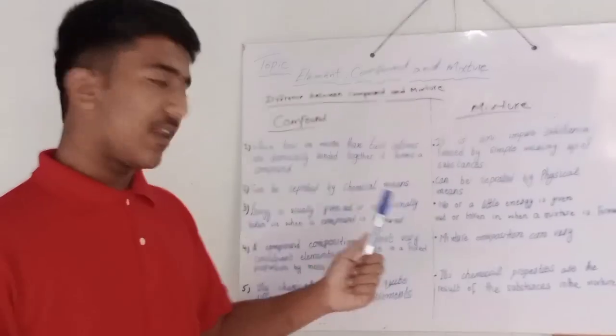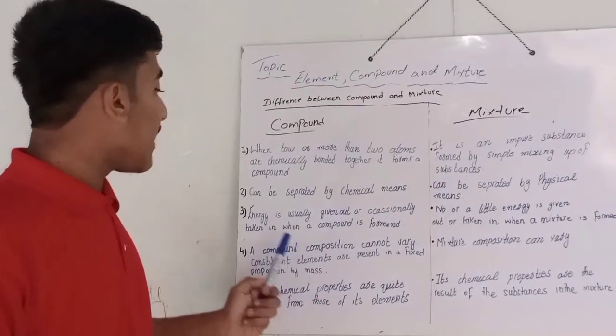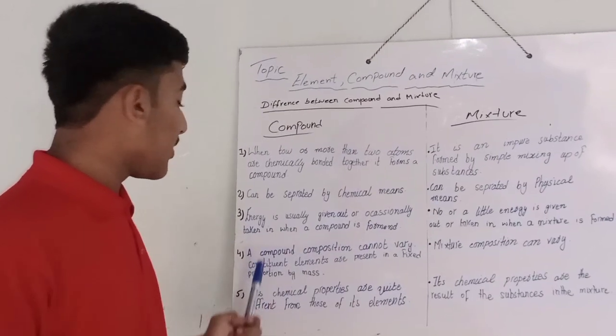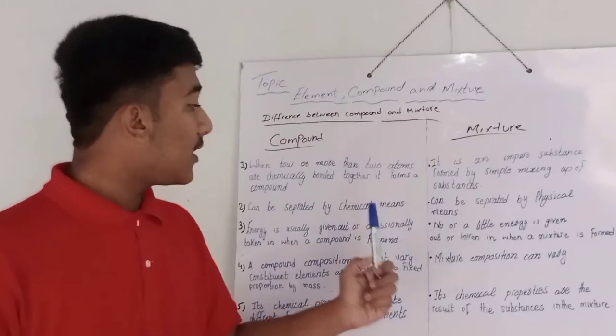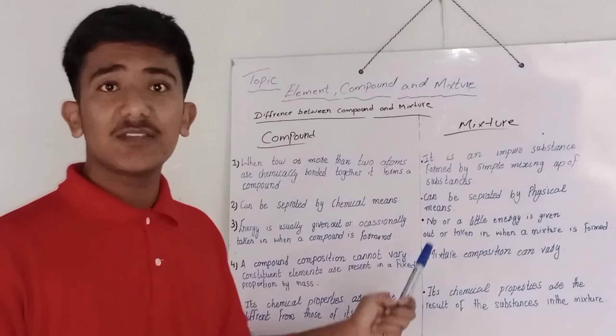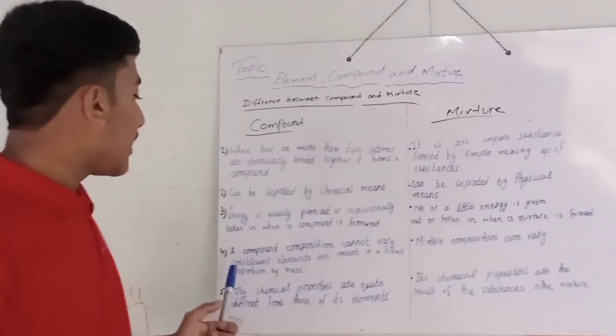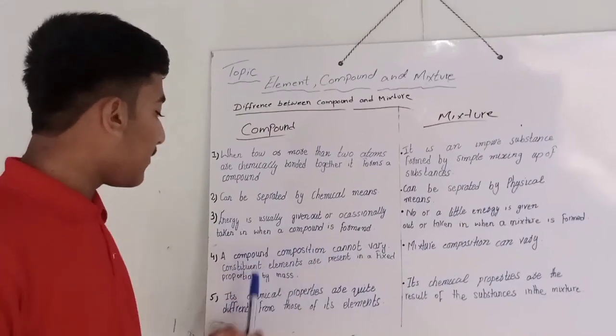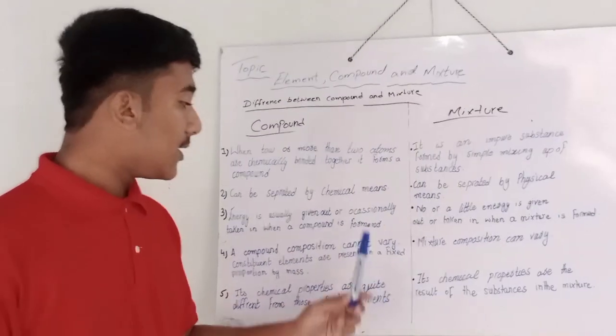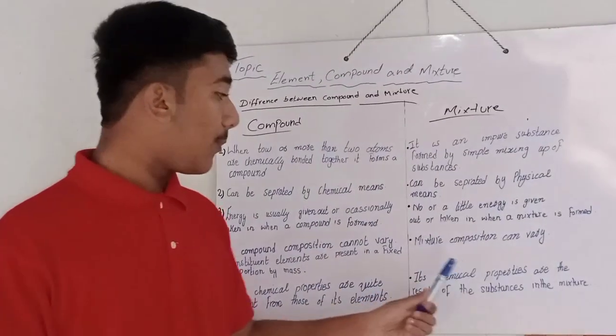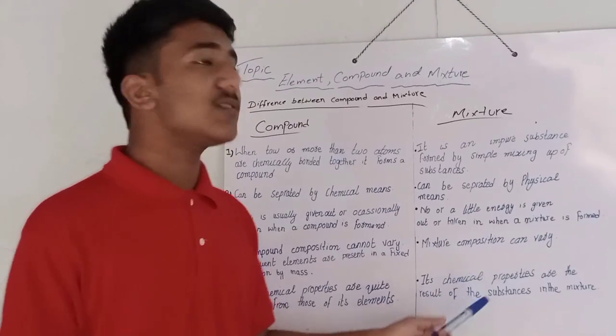Four, a compound composition cannot vary. Constituent elements are present in a fixed proportion by mass. In mixture, mixture composition can vary. Five, its chemical properties are quite different from those of elements. In mixture, its chemical properties are the result of the substances in the mixture.